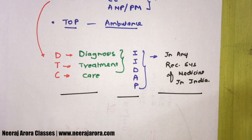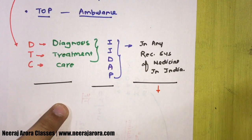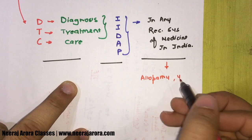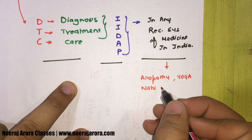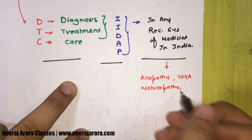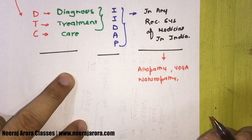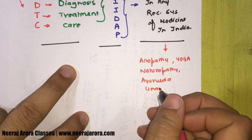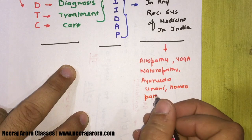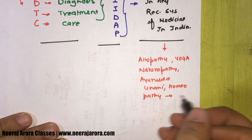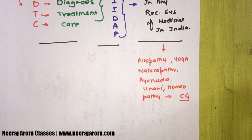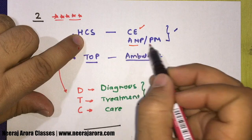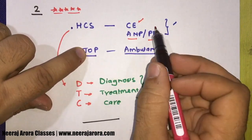Ab is recognized system of medicine in India kya hai? Allopathy - jo hum sabse zyada use karte hain. Yoga - jo hum sabse kam use karte hain. Naturopathy - mud bath, steam, pressing jaise treatments. Ayurveda, Unani medicine, Homeopathy, etcetera. Aur any other system that is recognized by CG (Central Government) - it is as simple as that. Quick revision: healthcare service, transportation of patient, DTC, IIDAP, in any recognized system of medicine in India.